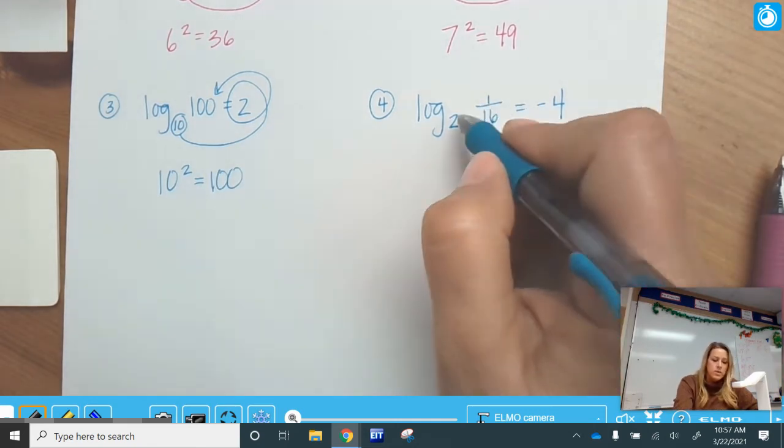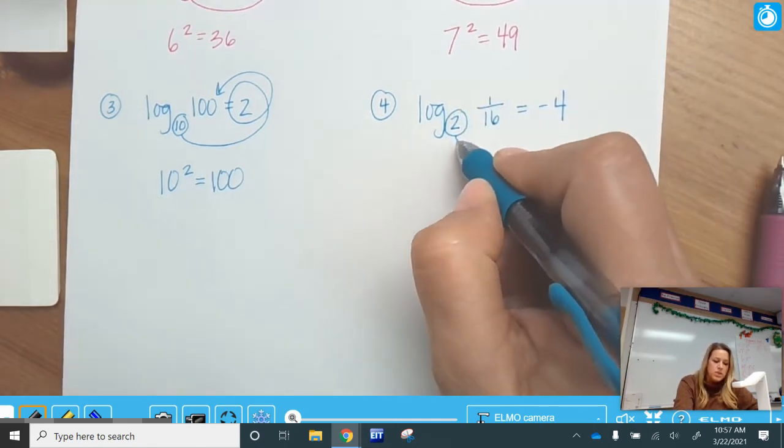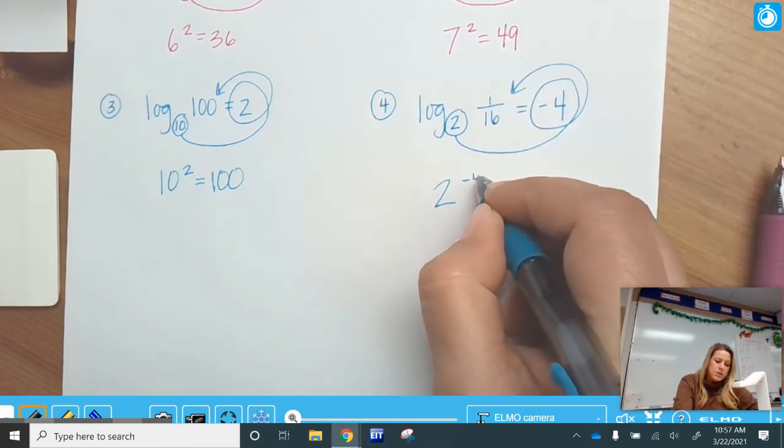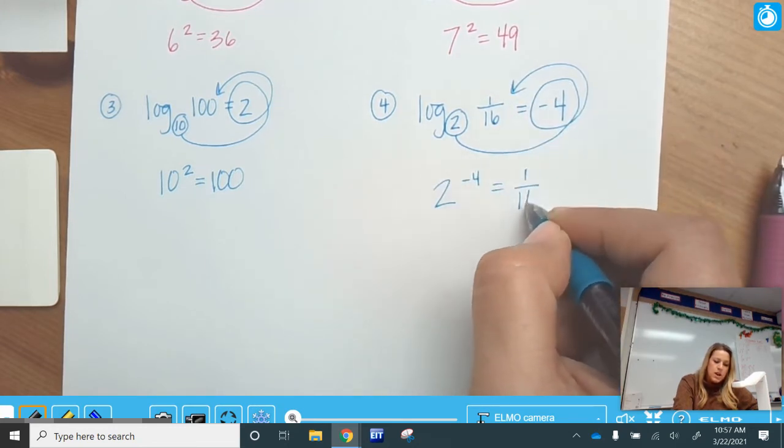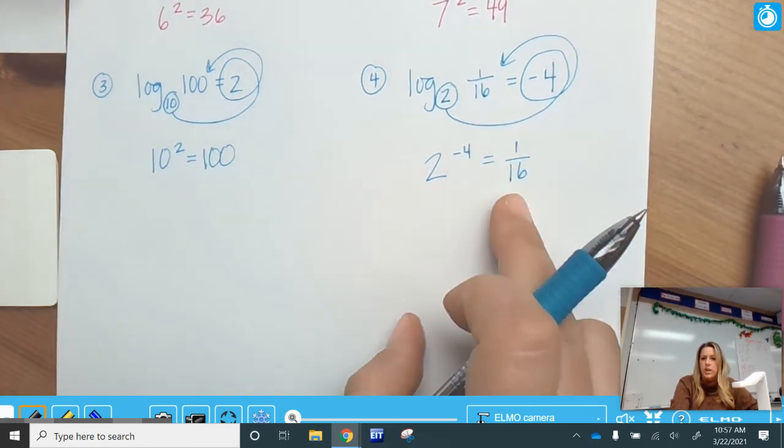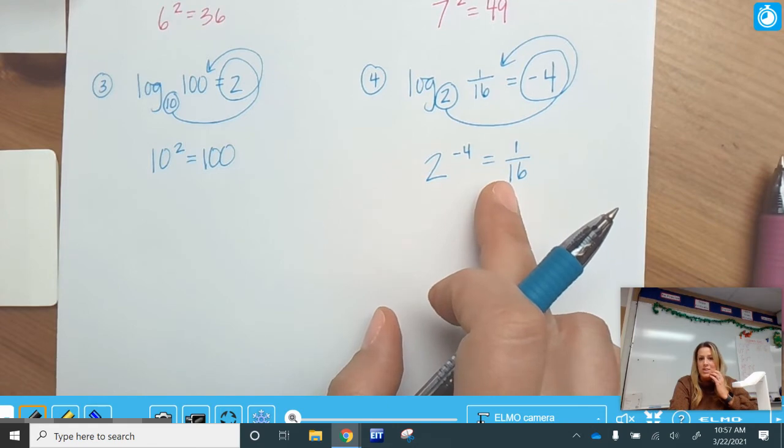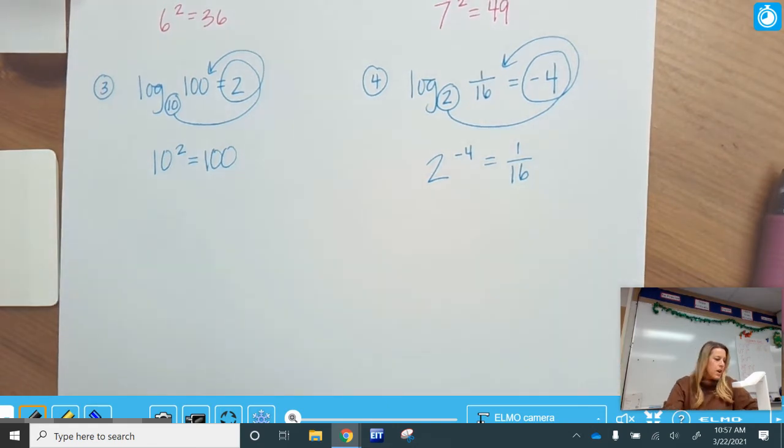Okay, this one here, take the 2, the base of 2, base, exponent, answer. Base, exponent, answer. And it should make sense. 2 to the negative 4 power will give us a fraction, because we know that the negative exponents are going to give us a fraction.